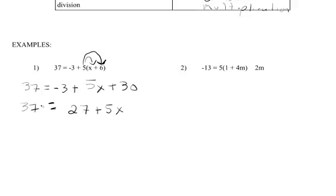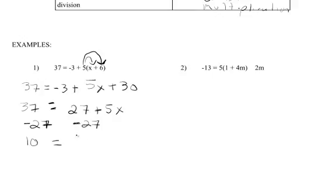Now we have to use reverse PEMDAS. We're going to undo addition and subtraction using the opposite operation. We have twenty seven plus five x equals thirty seven, and we want to get x by itself. So it makes sense to get rid of this twenty seven — it's a positive twenty seven, so the opposite is subtracting. Remember, this equal sign is a balance, so whatever you do on one side you have to do on the other side. Thirty seven minus twenty seven is ten, and we're left with five x.